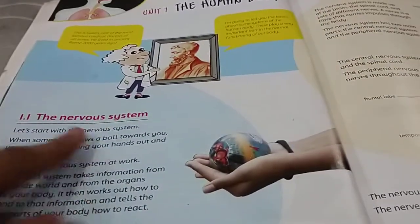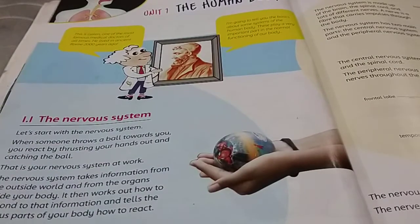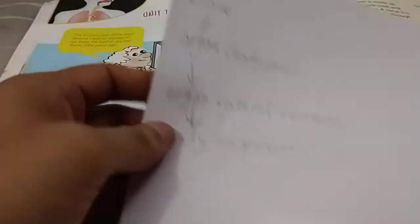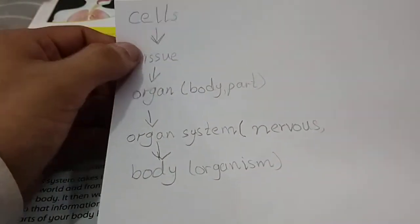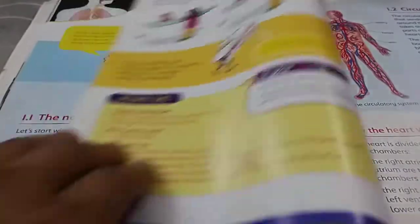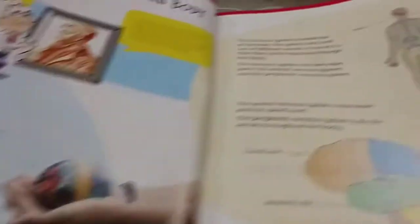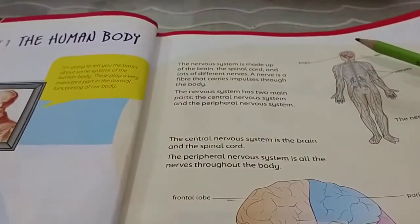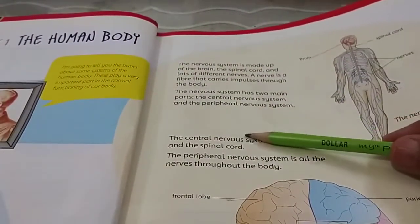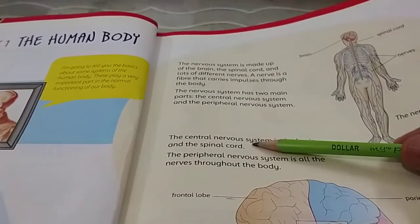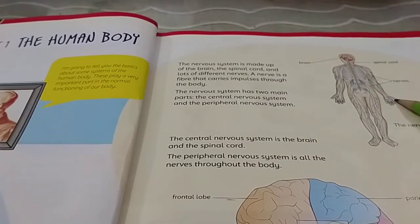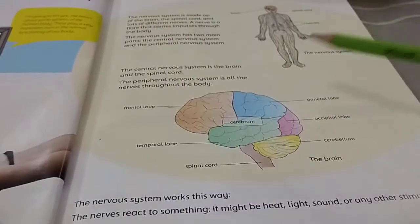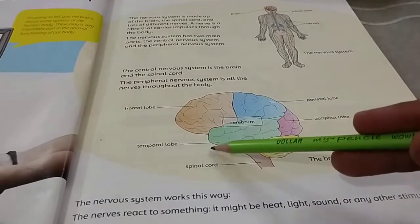In the first episode, we talked about the nervous system. The system is made up of organs, the organs are made up of tissue, and tissues are made up of cells. The nervous system has two parts: the central nervous system and the peripheral nervous system. The central nervous system has the brain and the spinal cord, and the peripheral nervous system has all the nerves. The brain has different parts, and every part has a different function.